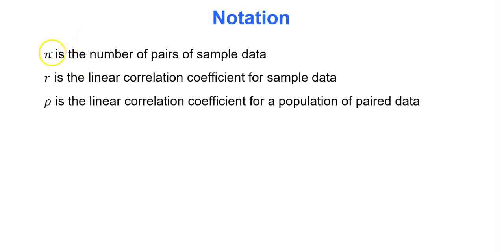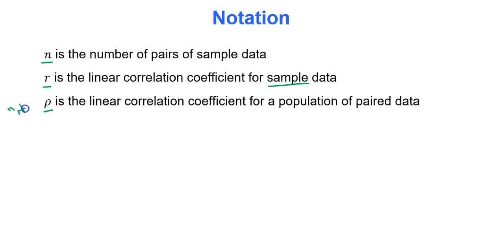Notation: n is the number of pairs of sample data. R is the linear correlation coefficient for the sample. And rho (spelled R-H-O) is the linear correlation coefficient for a population.